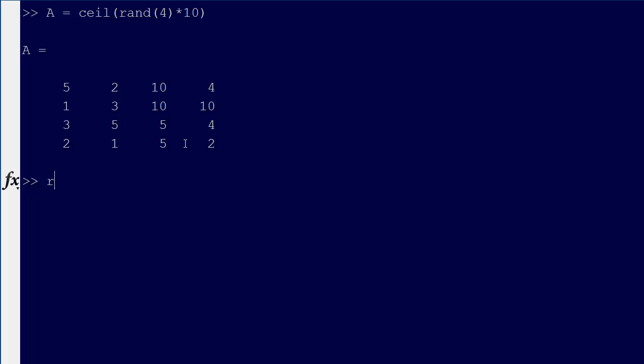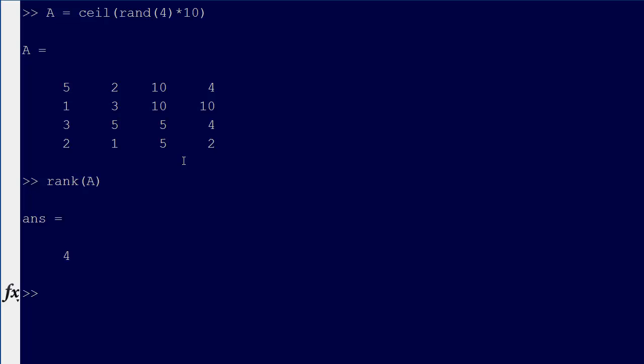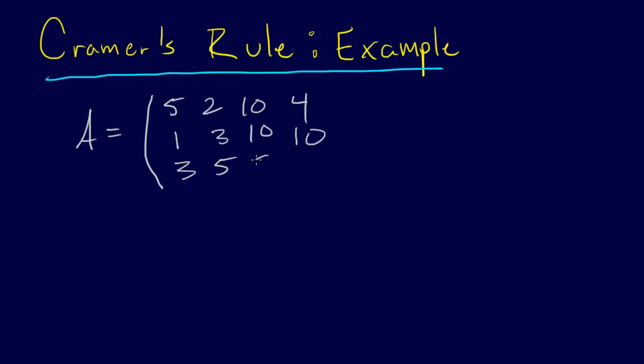Let's make sure it's full rank — rank of A — and it's full rank. So our matrix A is: first row 5, 2, 10, 4; second row 1, 3, 10, 10; third row 3, 5, 5, 4; and fourth row 2, 1, 5, 2. Alright, so here is our matrix A.